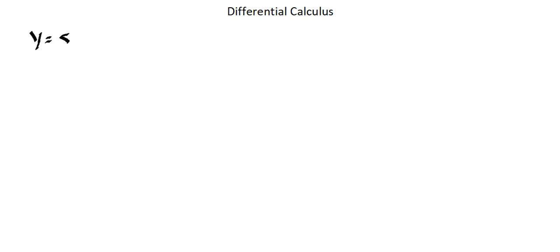Let's begin with sine. If our function is sine of x, then our derivative is cosine of x. Now with all of these derivatives, we're working in radian measures. These don't apply to degree measures — these rules apply to functions in radian measurement.